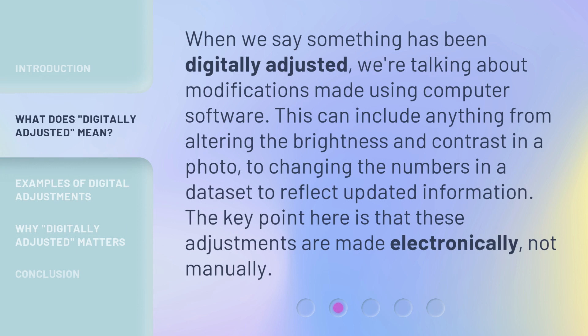When we say something has been digitally adjusted, we're talking about modifications made using computer software. This can include anything from altering the brightness and contrast in a photo, to changing the numbers in a dataset to reflect updated information. The key point here is that these adjustments are made electronically, not manually.